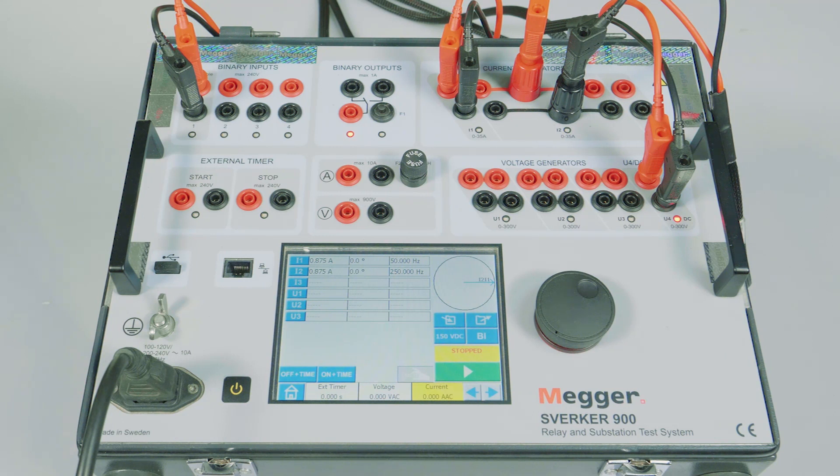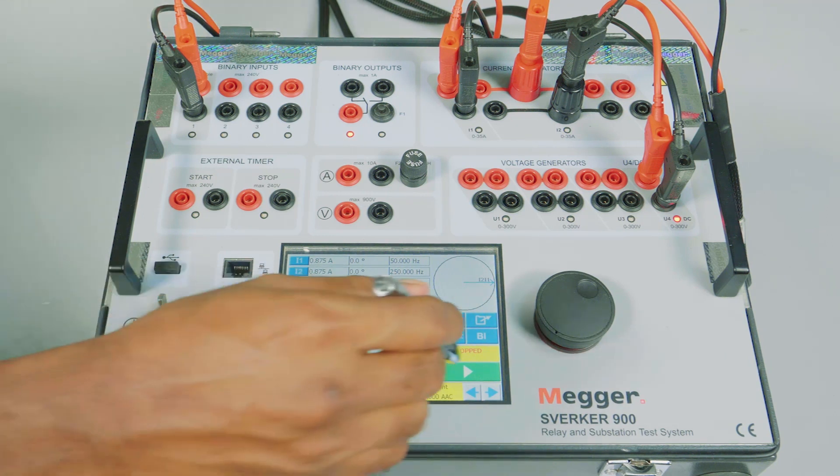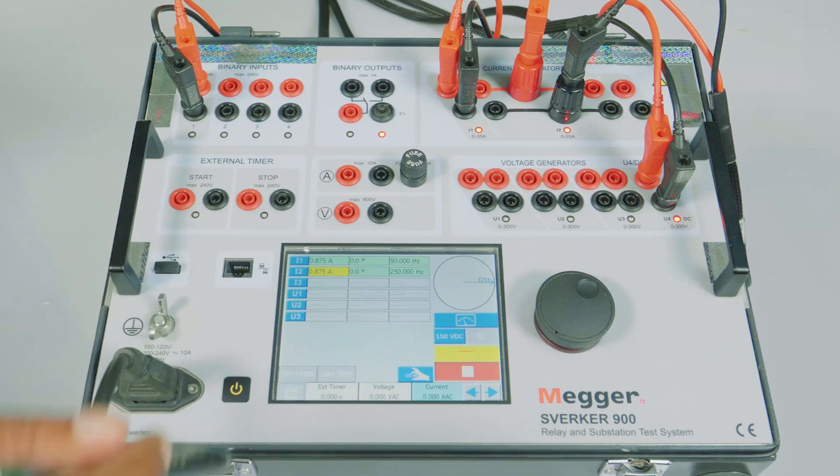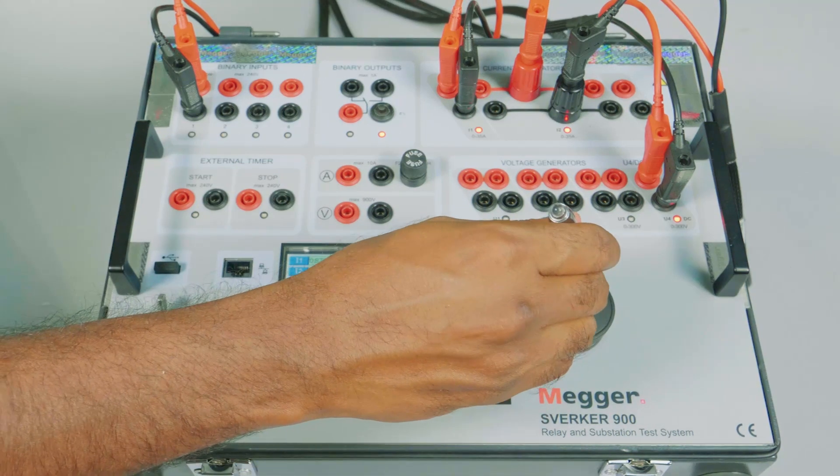Now let us decrease the magnitude in the LV and monitor the tripping of the relay. So the current is injected. The relay has not tripped. I am selecting the fifth harmonic and gradually reducing it.